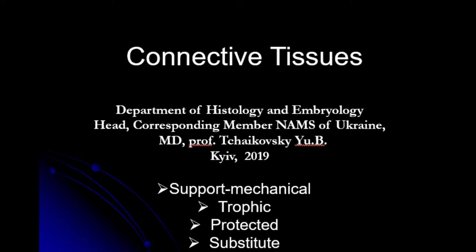Let me remind you the general plan of structure of tissues. All tissues are composed of such components as cells, extracellular structures, postcellular structures, and the extracellular matrix. Talking about connective tissue, you must remember it is composed by cells of different types, and extracellular matrix.